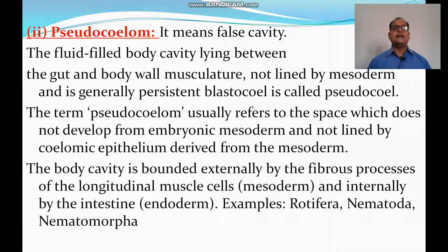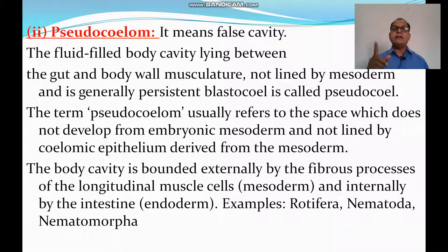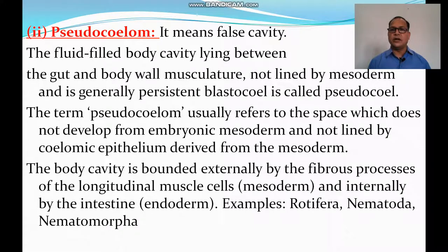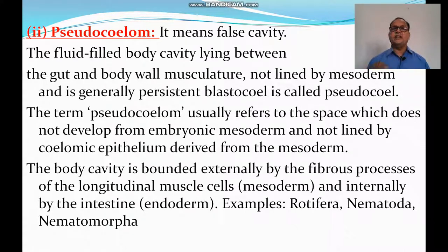The second type is Pseudocoelomata or Pseudocoelom, which means false cavity. It is a fluid-filled cavity lying between the gut and body wall musculature, not lined by mesoderm, and is generally a persistent blastocoel. The term Pseudocoelom usually refers to the space which does not develop from the embryonic mesoderm and is not lined by coelomic epithelium derived from mesoderm. The body cavity is bounded externally by fibrous processes of longitudinal muscle cells and internally by the intestine or endoderm, but not by mesoderm. Therefore it is called a false cavity. For example, Rotifers, Nematodes, and Nematomorphs are the Pseudocoelomates.